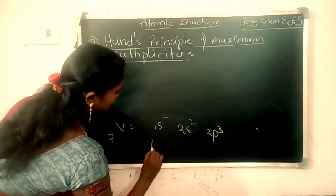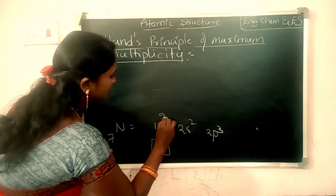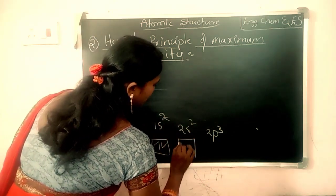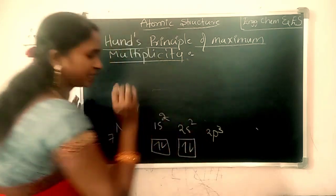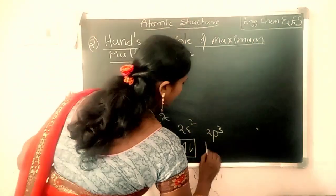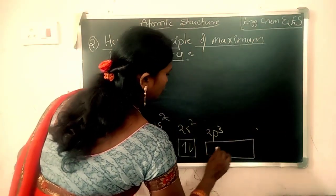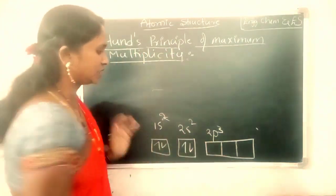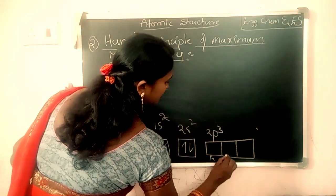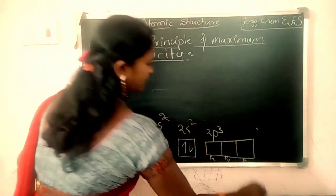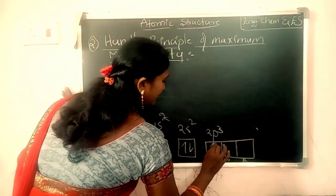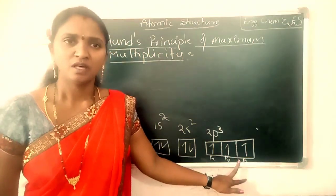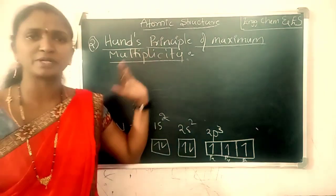Let us look at the orbitals. The 2 electrons of 1s can be paired, and the 2 electrons of 2s can also be paired. There are 3 electrons present in 2p3, occupying px, py, and pz. The first electron enters into px, the next one into py, and the third one into pz. This is according to Hund's principle.